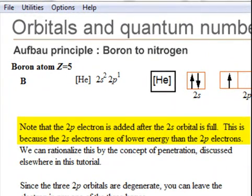We only add a p electron when the 2s orbital is full, because the 2s state is of lower energy than the 2p state.